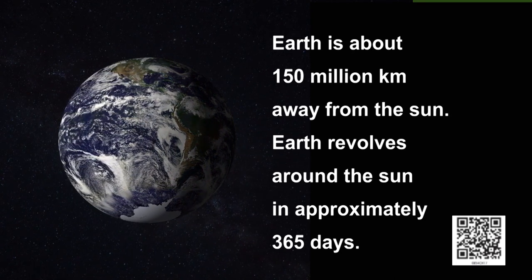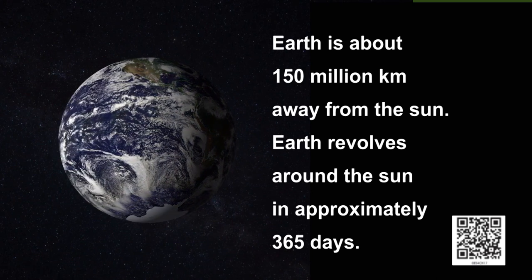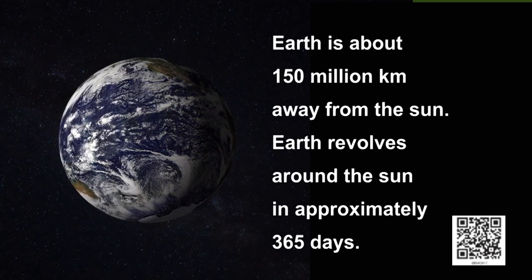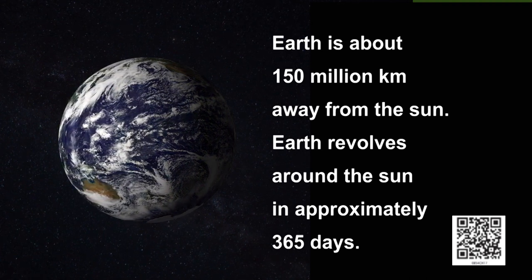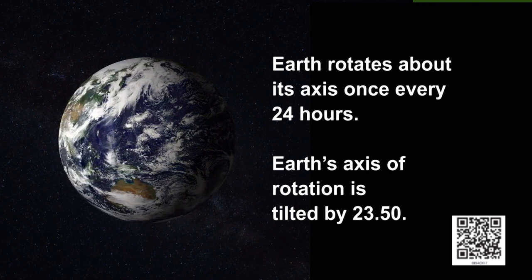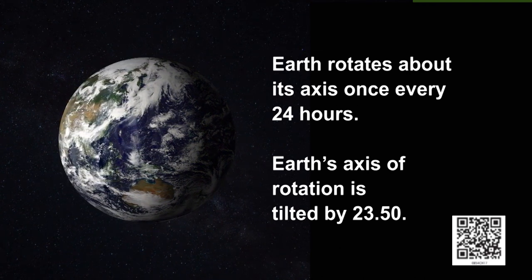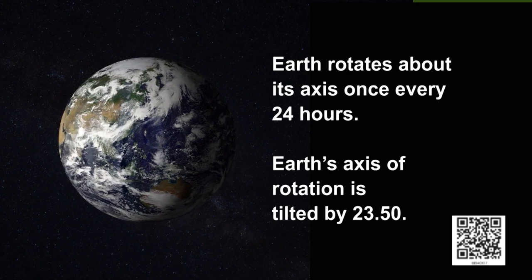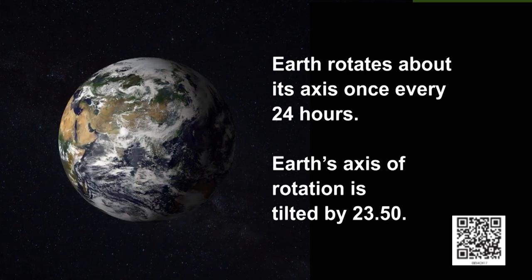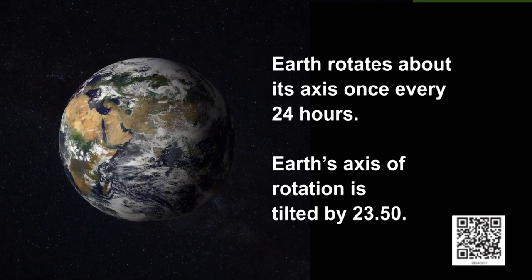As we discussed earlier, earth is about 150 million kilometers away from the sun. Earth revolves around the sun in approximately 365 days. Also, earth rotates about its axis once every 24 hours. Interestingly, earth's axis of rotation is tilted by 23 and a half degrees.